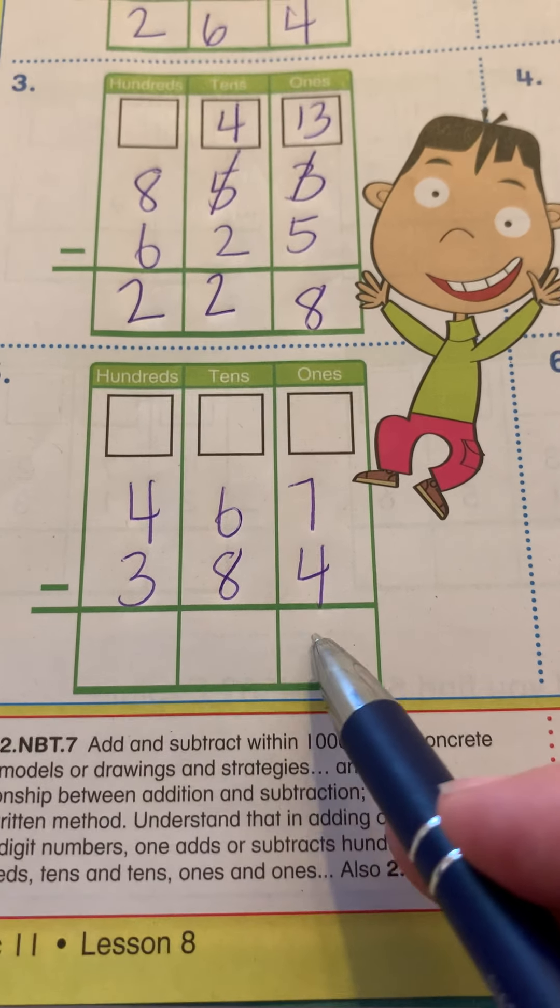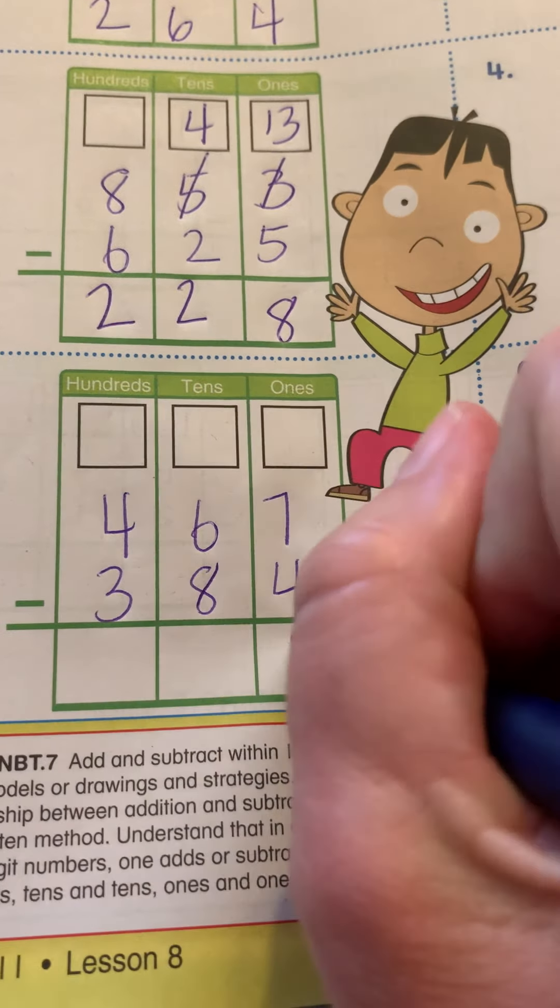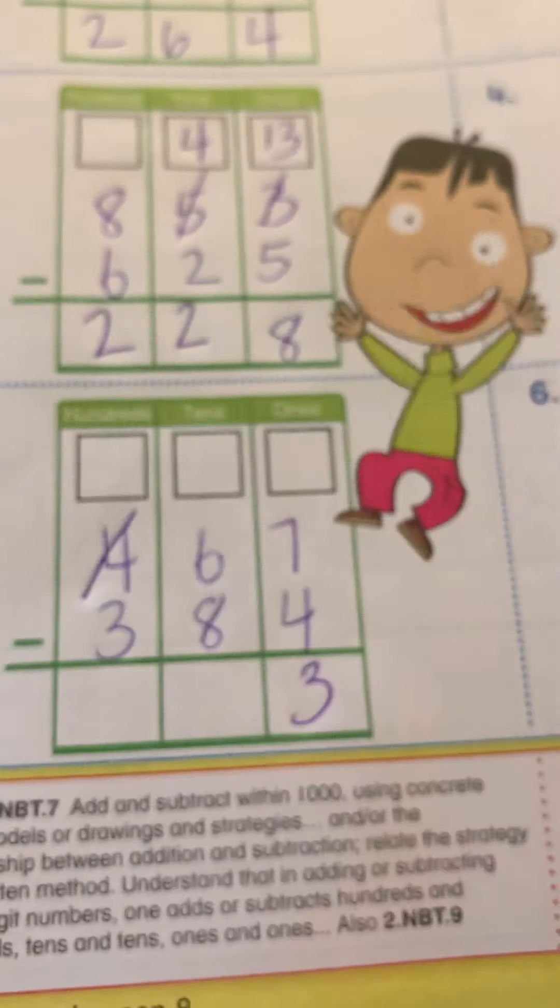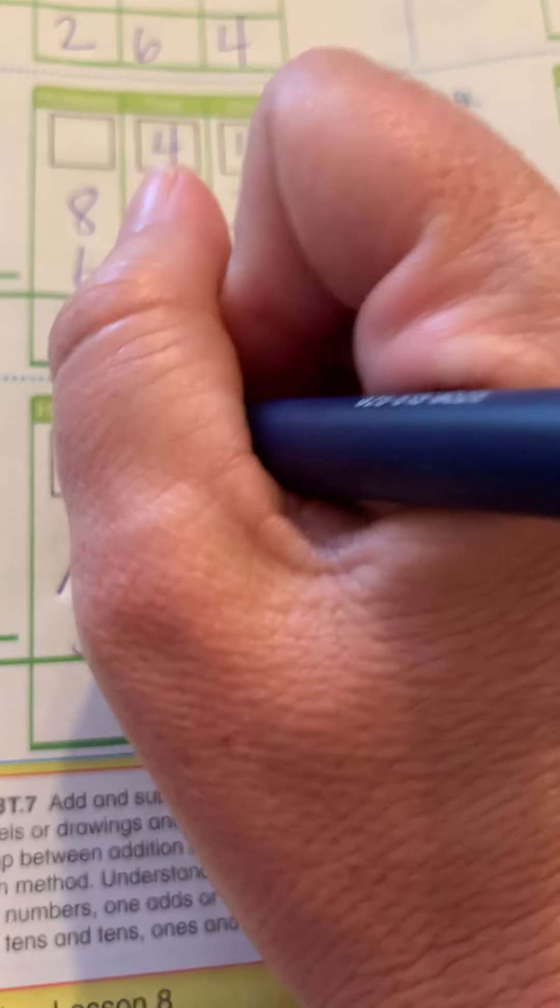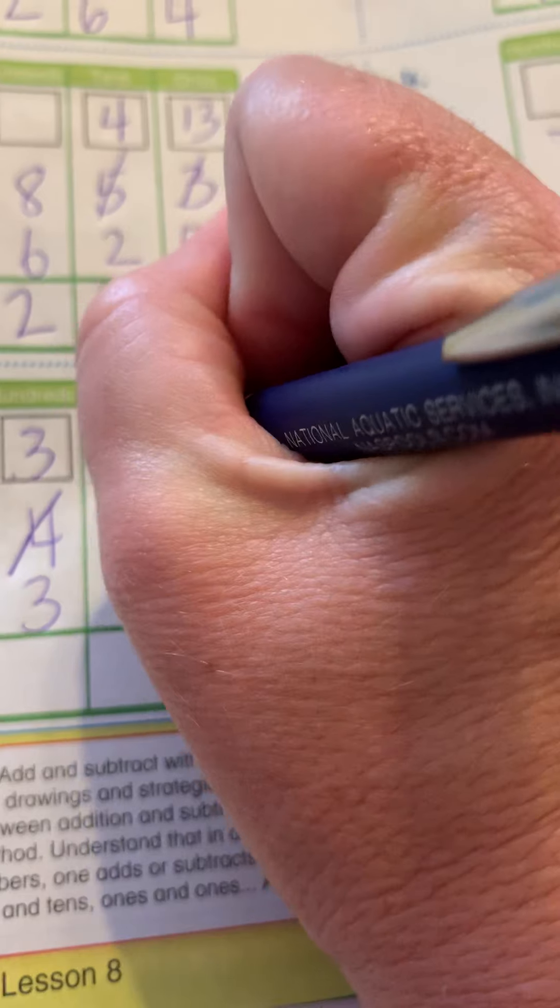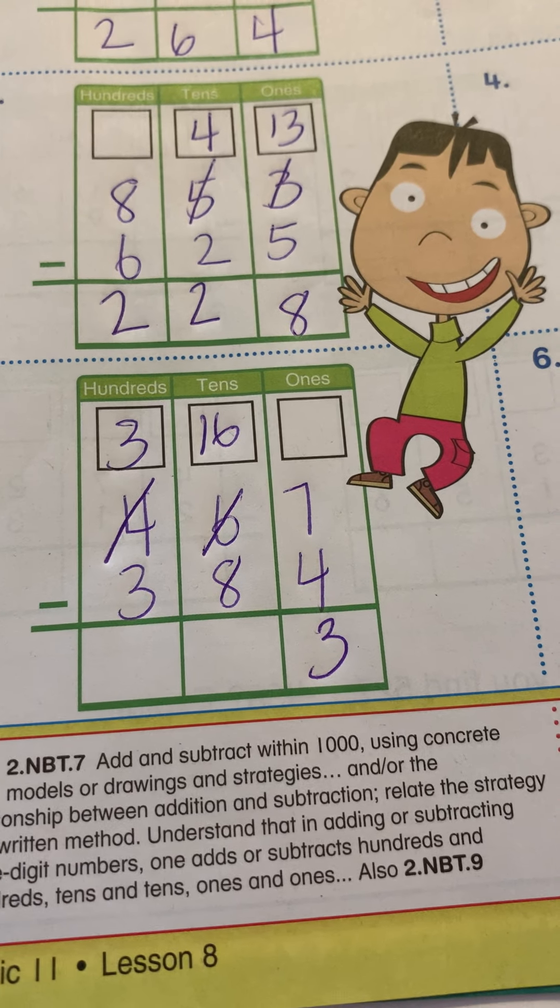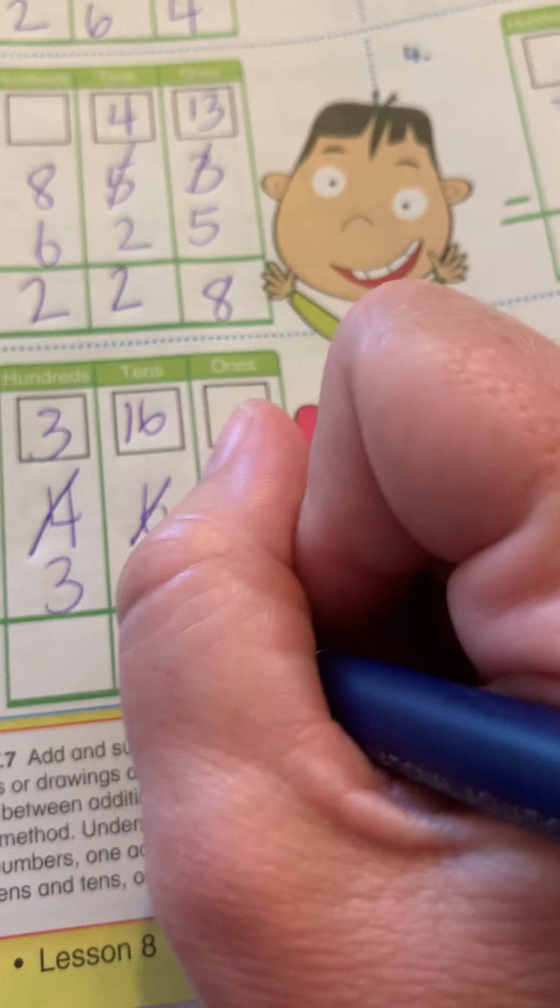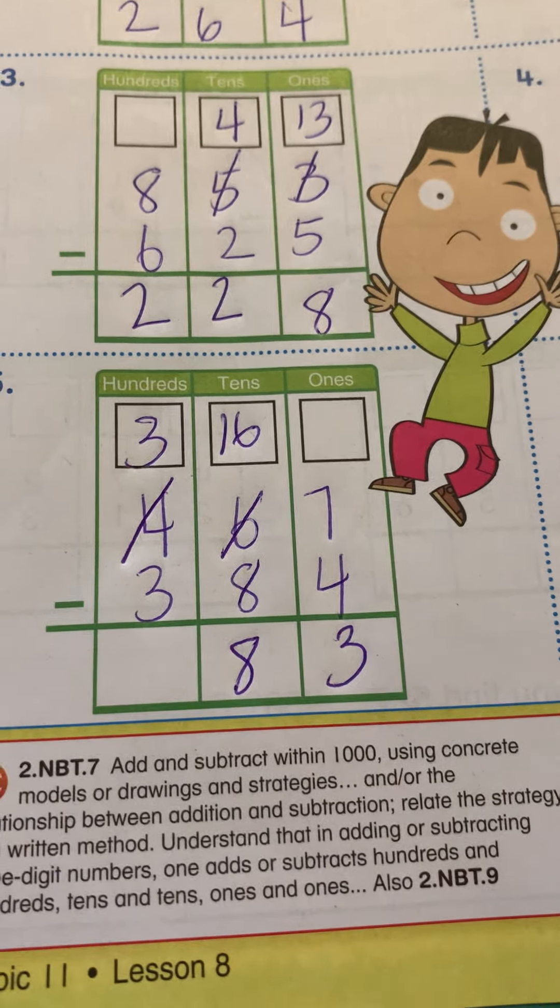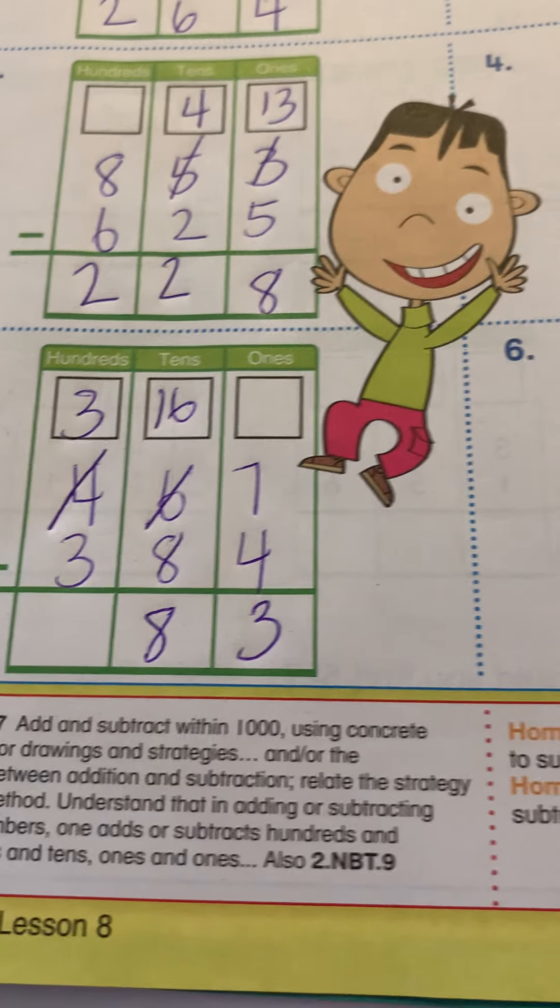Seven minus four is three. Six minus eight. You can't. So I have to cross off the four, make it a three. And make the six a 16. So 16 minus eight is a double. So your answer was eight. And three minus nothing is, I mean, three minus three is nothing. So my answer is just 83.